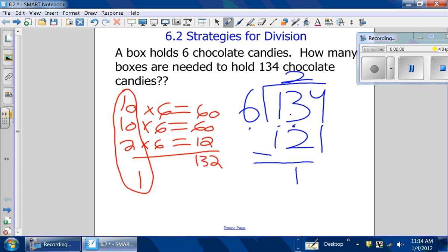Then you bring down the 4. You divide 6 into 14. 6 can go into 14, 2 times. Then you multiply 6 by 2. It is 12 again.